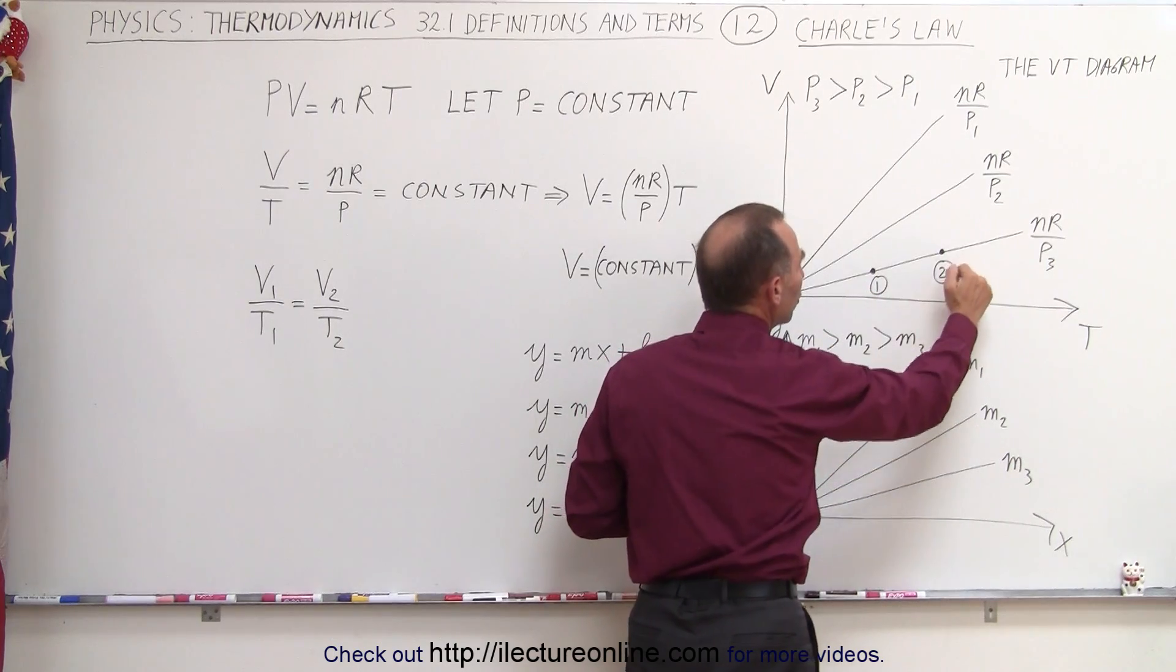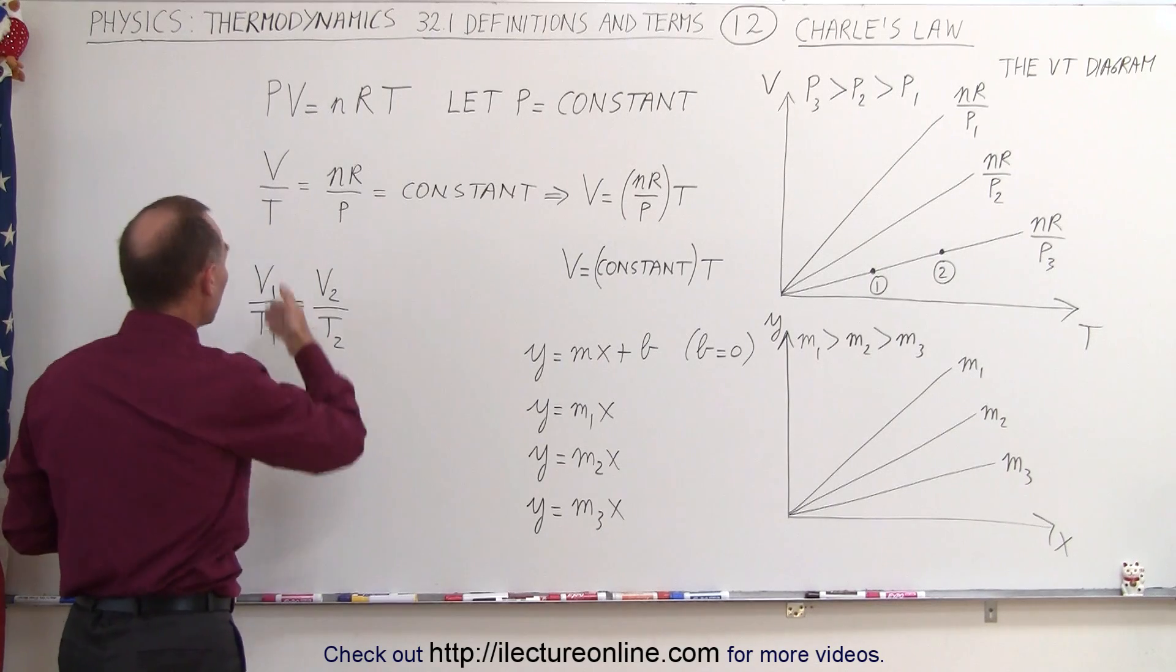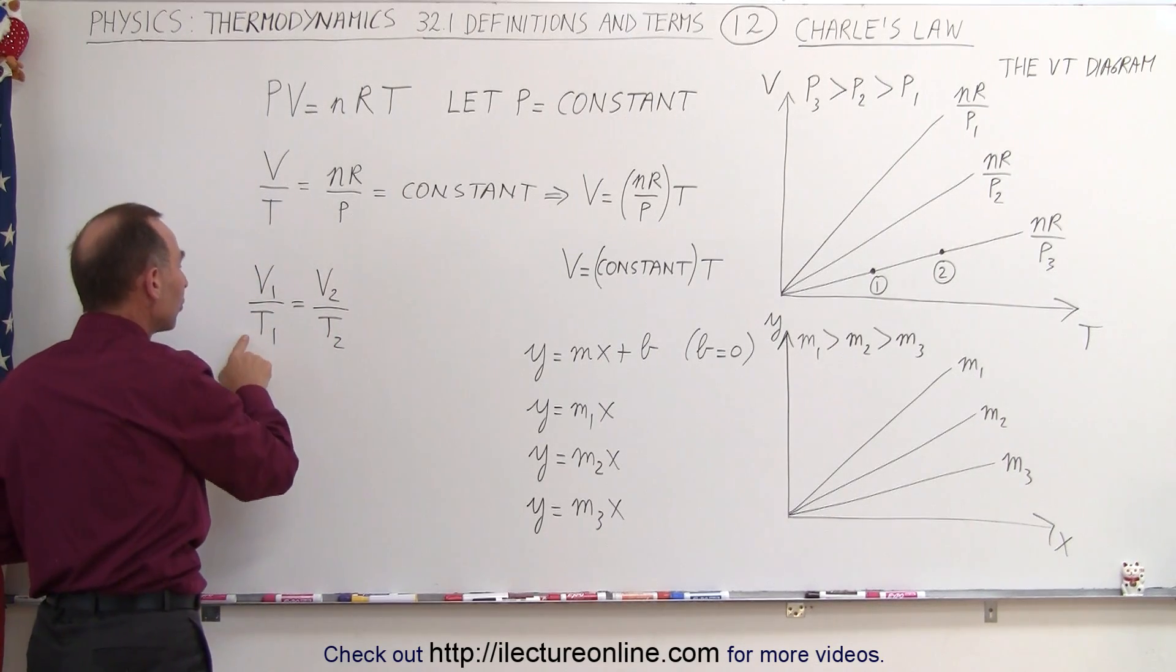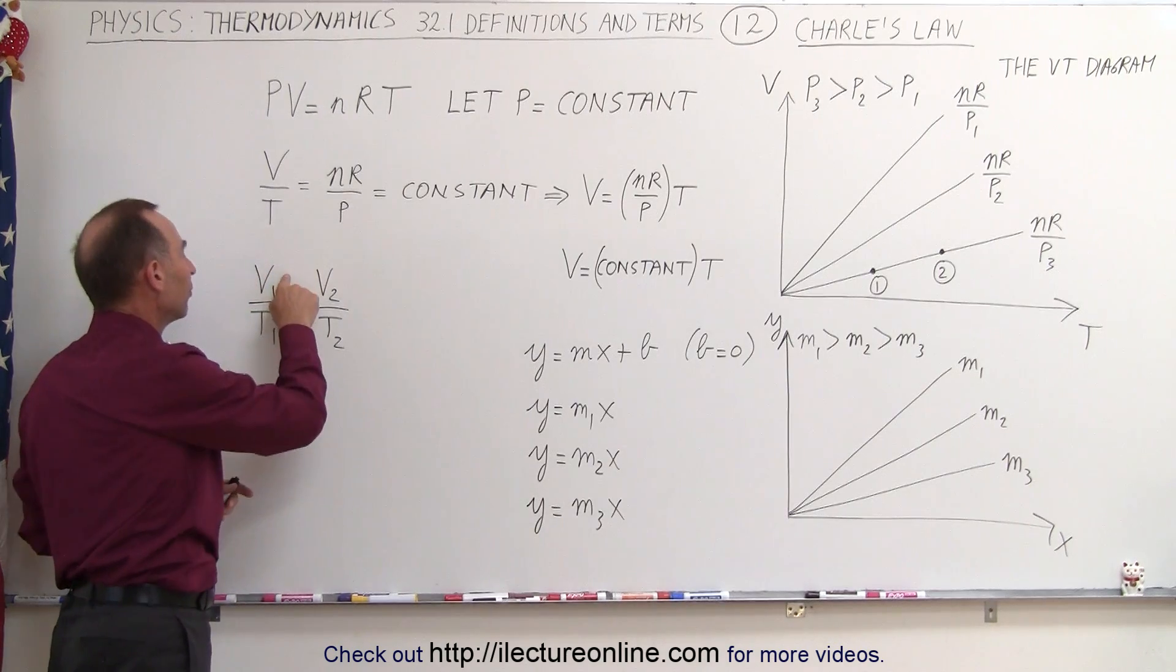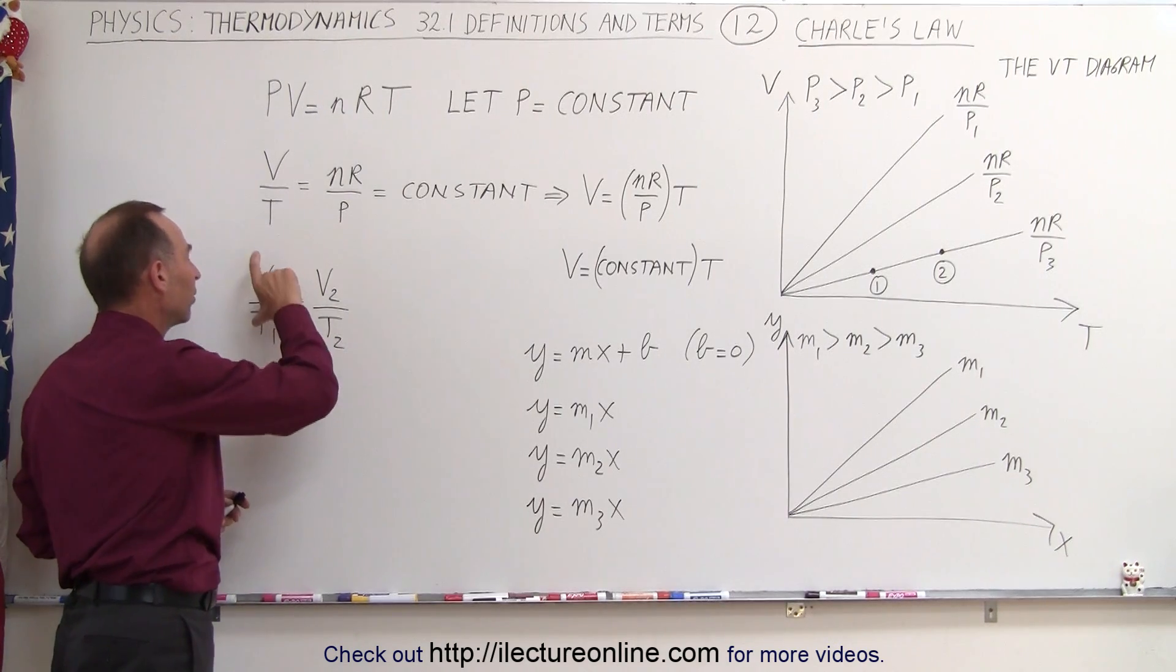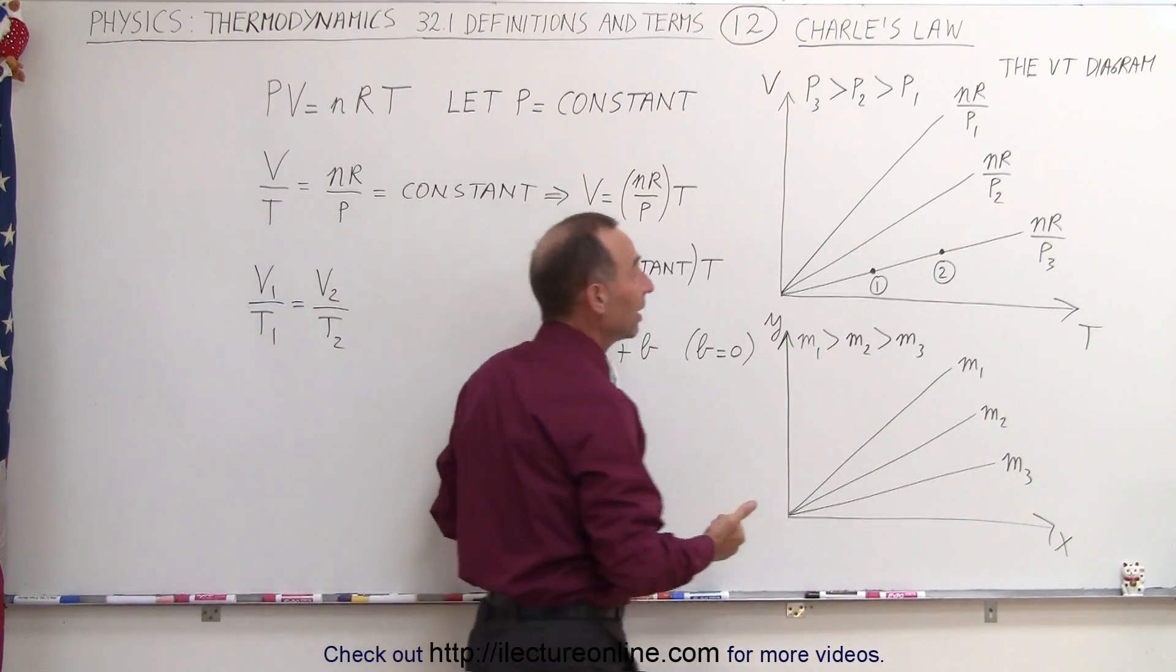If you double the temperature, you will double the volume. Because with Charles' law, the ratio of the volume to the temperature remains the same from one state to the next. And so you double the volume, you must double the temperature because that ratio must remain a constant.